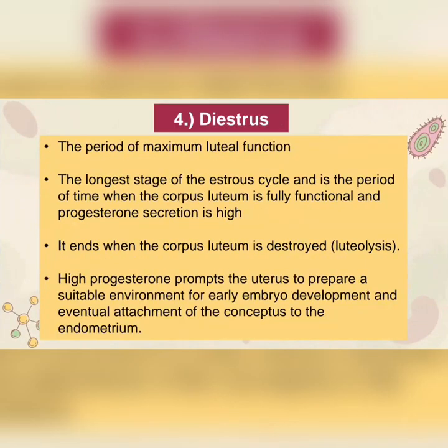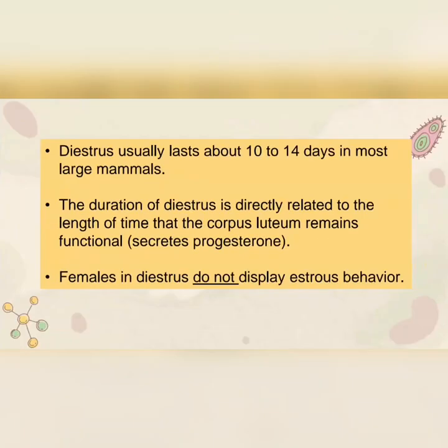For the last stage of the estrous cycle, we have diestrus. It is the period of maximum luteal function — the longest stage of the estrous cycle — when the corpus luteum is fully functional and progesterone secretion is high. It ends when the corpus luteum is destroyed by means of luteolysis. High progesterone allows the uterus to prepare a suitable environment for early embryo development and eventual attachment of the conceptus to the endometrium. Diestrus usually lasts about 10 to 14 days in most large mammals, and its duration is directly related to the length of time the corpus luteum remains functional. Females in diestrus do not display estrus behavior.